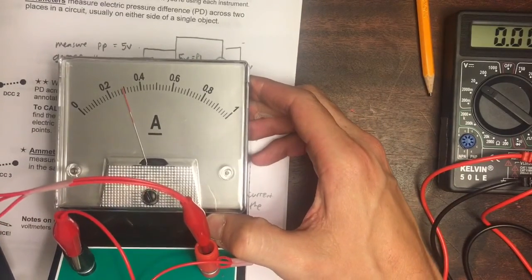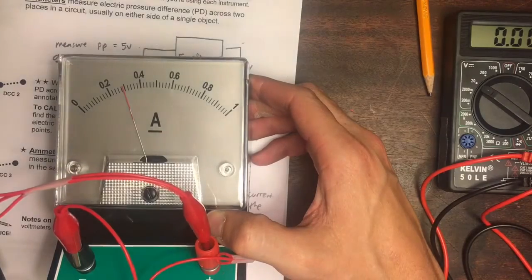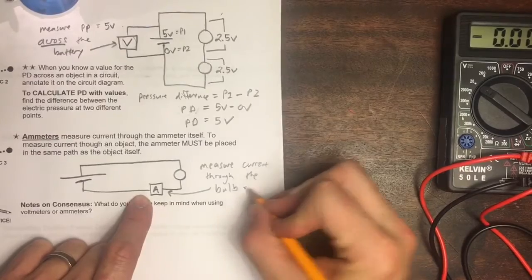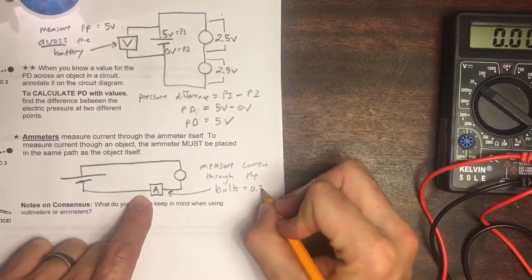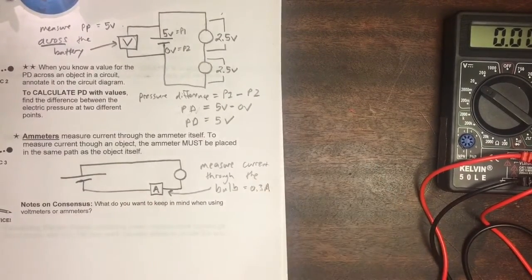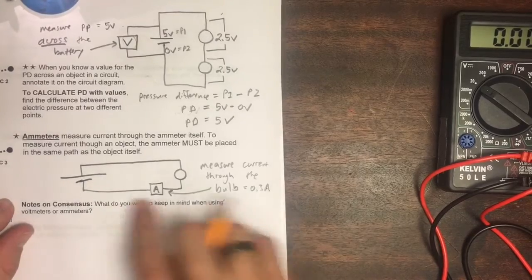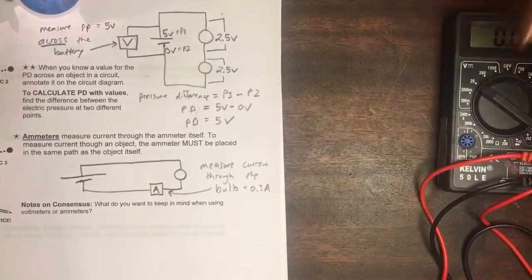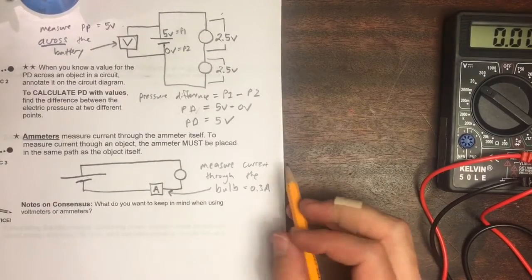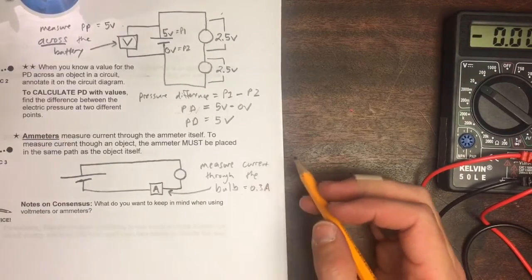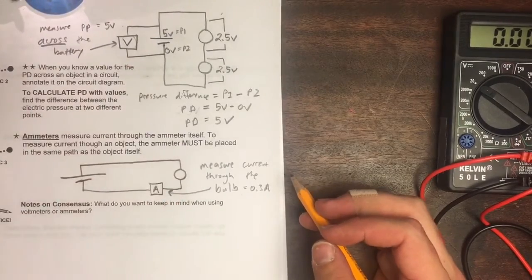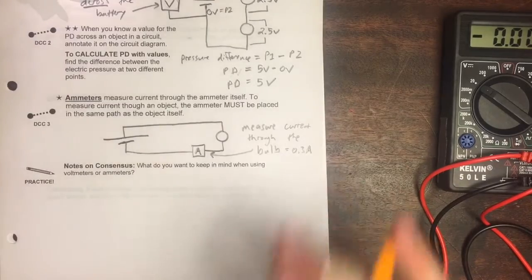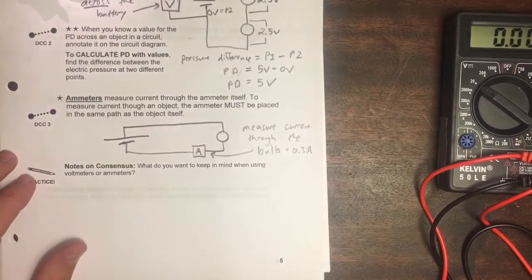So notice if I actually read this value, this says halfway between 0.2 and 0.4, which would be 0.3 amps. This is an example of a current through a specific object. Remember, we know that as the current increases through a bulb, the brightness has to increase as well. But an ammeter gives us an actual number for that value.